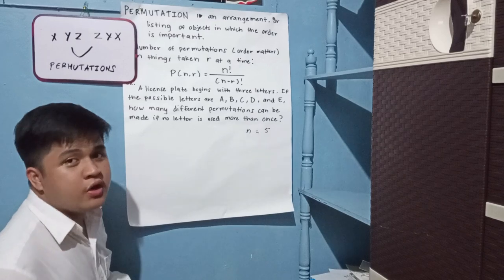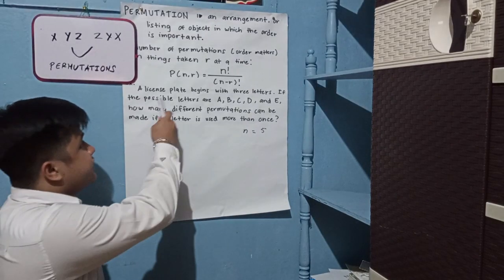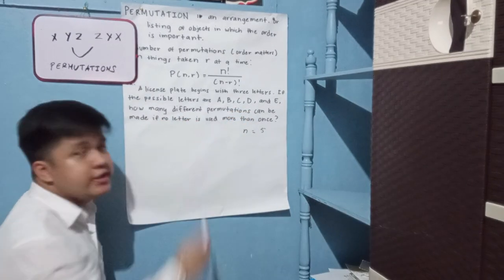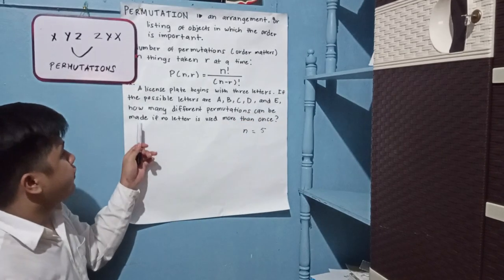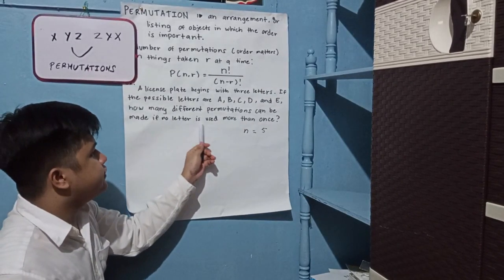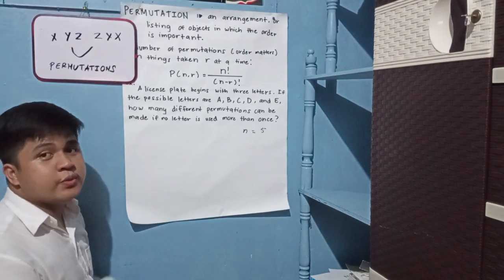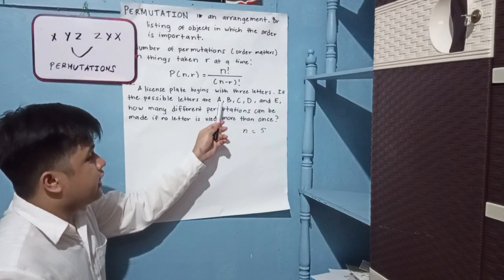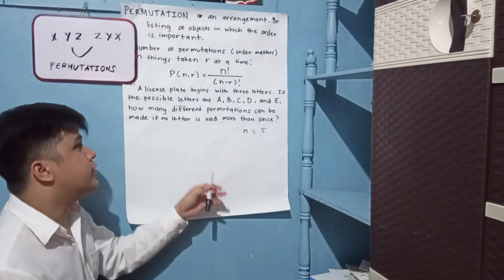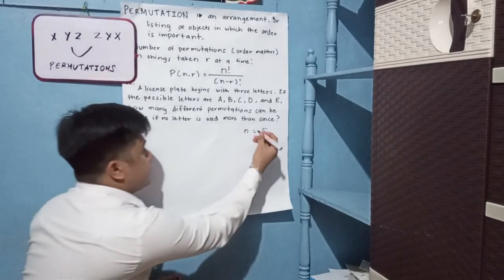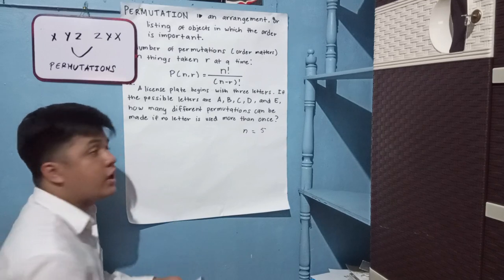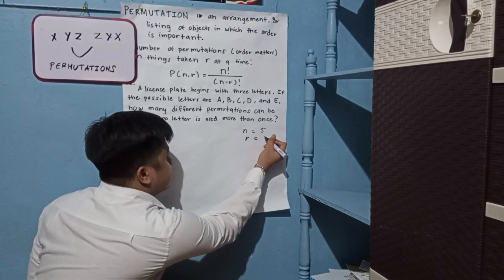So here is an example of a permutation. A license plate begins with three letters. The possible letters are A, B, C, D, and E. The question is: how many different permutations can be made if no letter is used more than once? We have five letters, so N equals five. However, in this problem, we will only make three letters, therefore R equals three. Let's write the formula of permutation and substitute the values: P equals N factorial over N minus R factorial, where N equals five and R equals three.